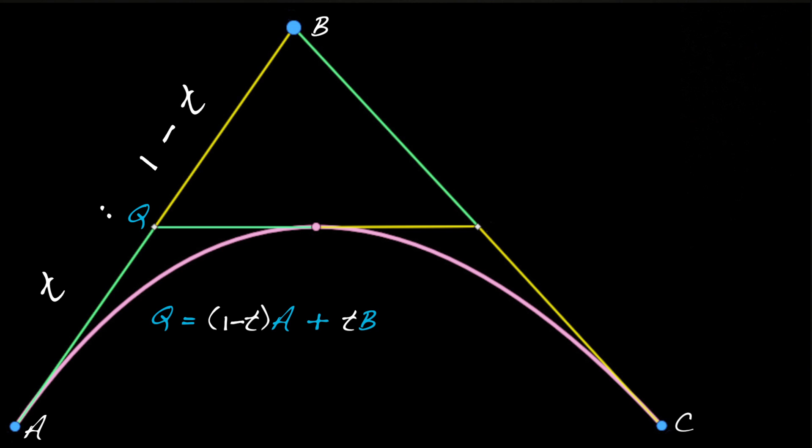Next, we construct a point R on the line segment BC, which means that R can be written as R equals 1 minus T times B plus T times C.